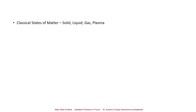Classically we have learnt that the different states of matter are solid, liquid, gas, and plasma. Among these, solids are further classified into crystalline and non-crystalline solids. Let us look into the properties of these crystalline and non-crystalline solids.